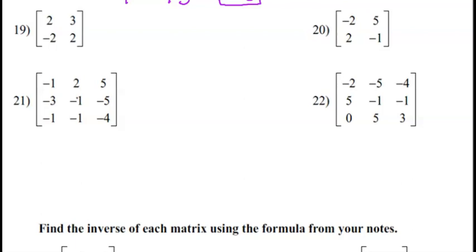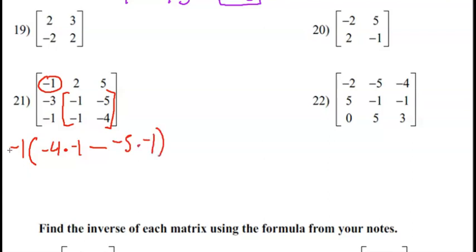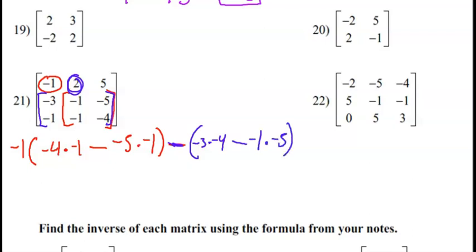Let's look at number 21. The formula for a 3-by-3 determinant is a bit more complicated. We take the first element, negative 1, times the determinant of its 2-by-2 submatrix: negative 4 times negative 1 minus negative 5 times negative 1. Then subtract the second element, 2, times the determinant of its submatrix: negative 3 times negative 4 minus negative 1 times negative 5. Then add the third element, 5, times its submatrix determinant: negative 3 times negative 4 minus negative 1 times negative 5.